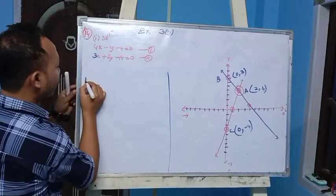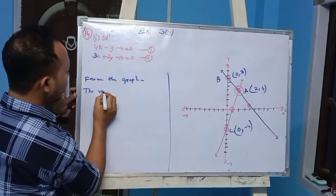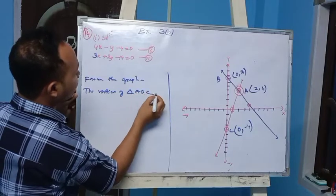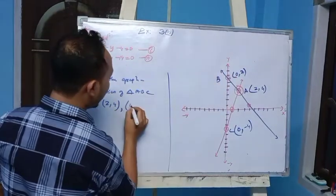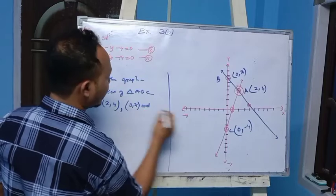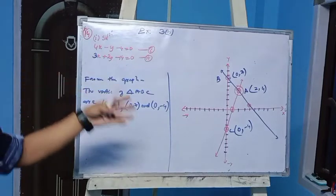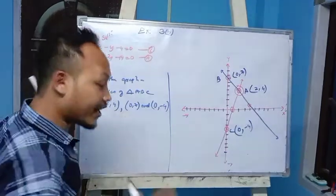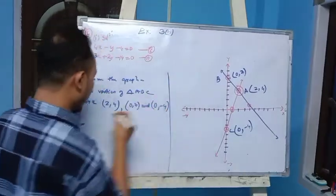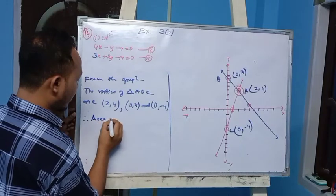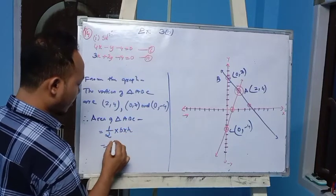From the graph, the vertices of triangle ABC are: A is (2, 4), B is (0, 7), and C is (0, minus 4). These are the required coordinates. Now we have to find the area of triangle ABC which is formed with the Y-axis. Therefore, area of triangle ABC equals half times base times height.